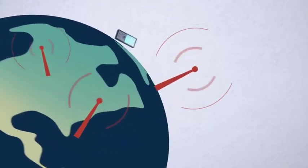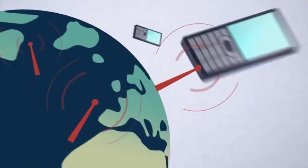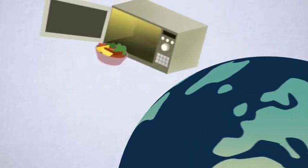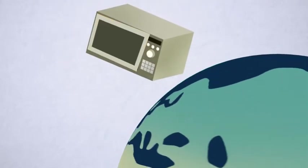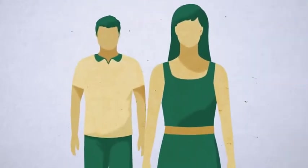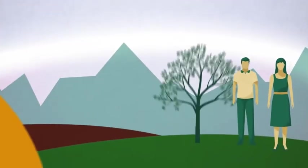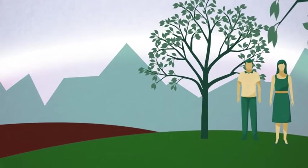Radio waves enable us to communicate and share information. Microwaves cook our food. Infrared radiation warms us. Visible light illuminates our lives and is essential for food production.